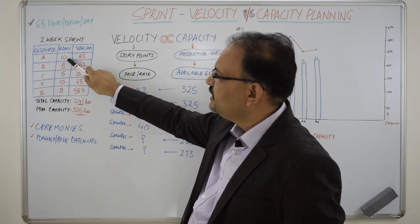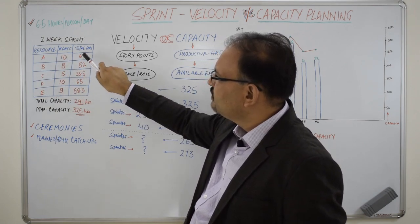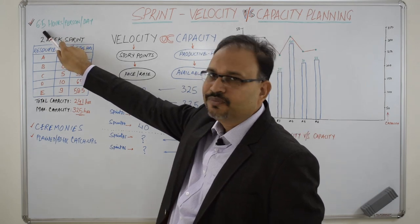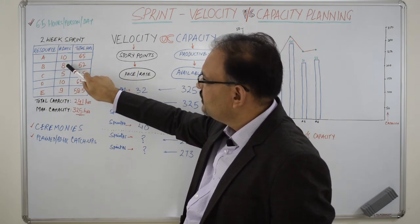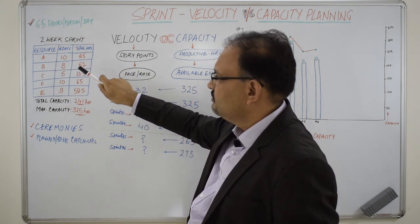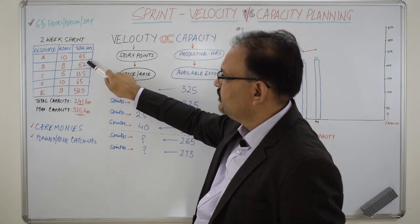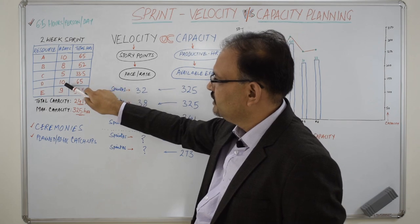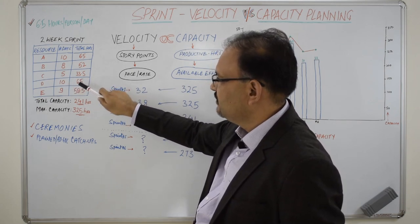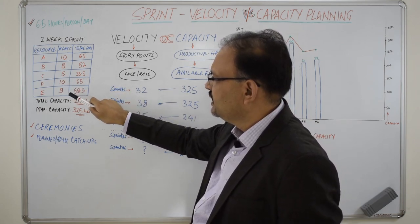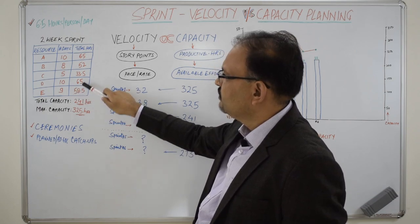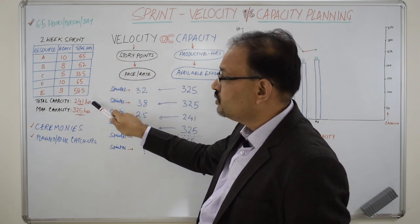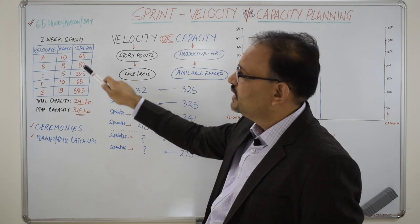Resource A is available for full 10 days. So his productive available hours are 10 multiplied by 6.5. B is absent for 2 days, so his available productive hours are 52. C is available only for 5 days, that is 33.5. D is again available for full 10 days, so that is 65. E is absent for 1 day, so 58.5. The total of these hours becomes the total capacity of the team for that sprint.